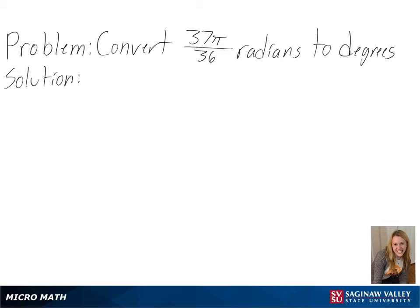Our problem is to convert 37 pi over 36 radians into degrees. To start out, we know that pi radians is equal to 180 degrees, so we can divide each side by pi to know the amount of degrees in one radian.